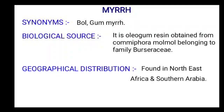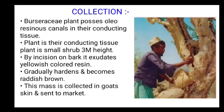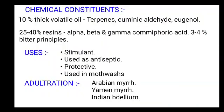Collection of myrrh: Burseraceae plants possess oleoresinous canals in their conducting tissue. The plant is a small shrub of 3 meters height. By incision on the bark, it exudes yellowish colored resin, which gradually hardens and becomes reddish brown. This mass is collected in goatskin and sent to market. Chemical constituents of myrrh: it contains 10% thick volatile oil — including terpenes, cumic aldehyde and eugenol — then 25–40% resins including alpha, beta and gamma commiphoric acid, and 3–4% bitter principles.